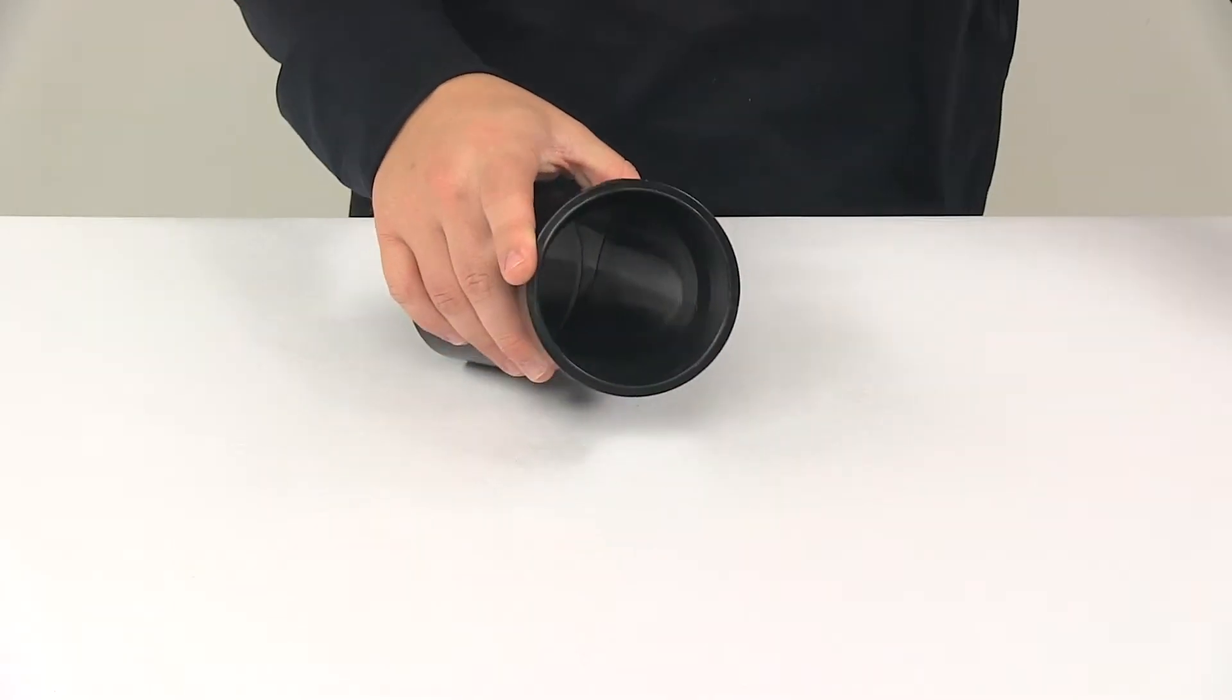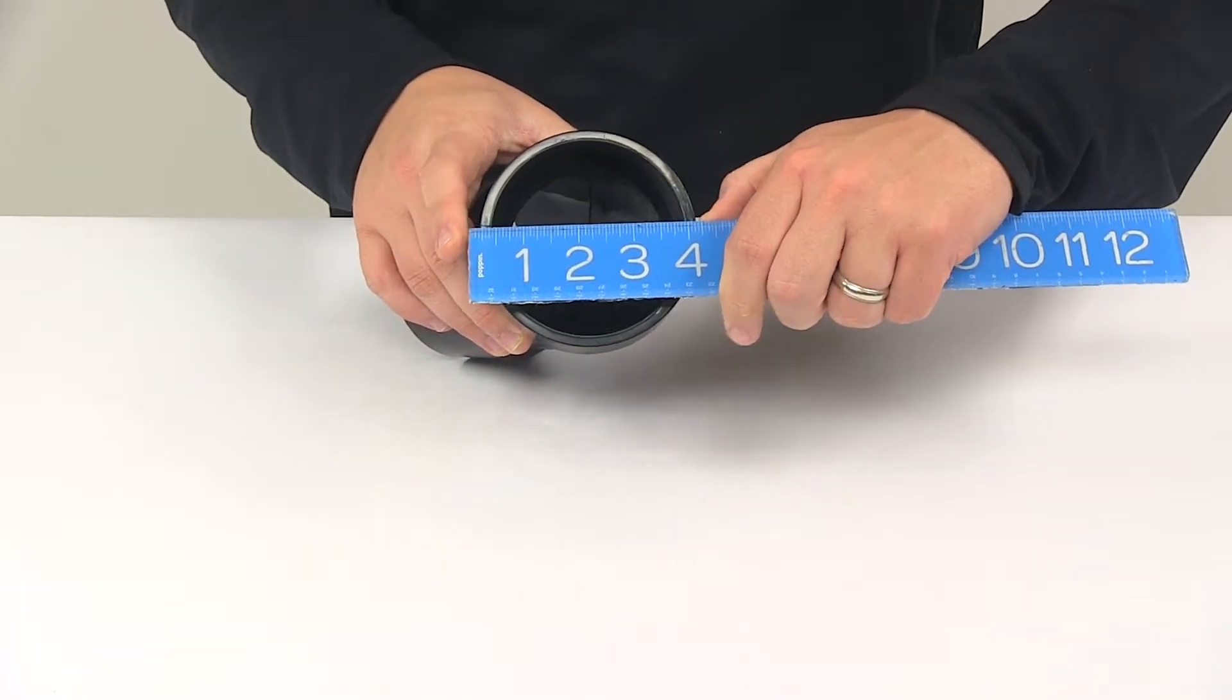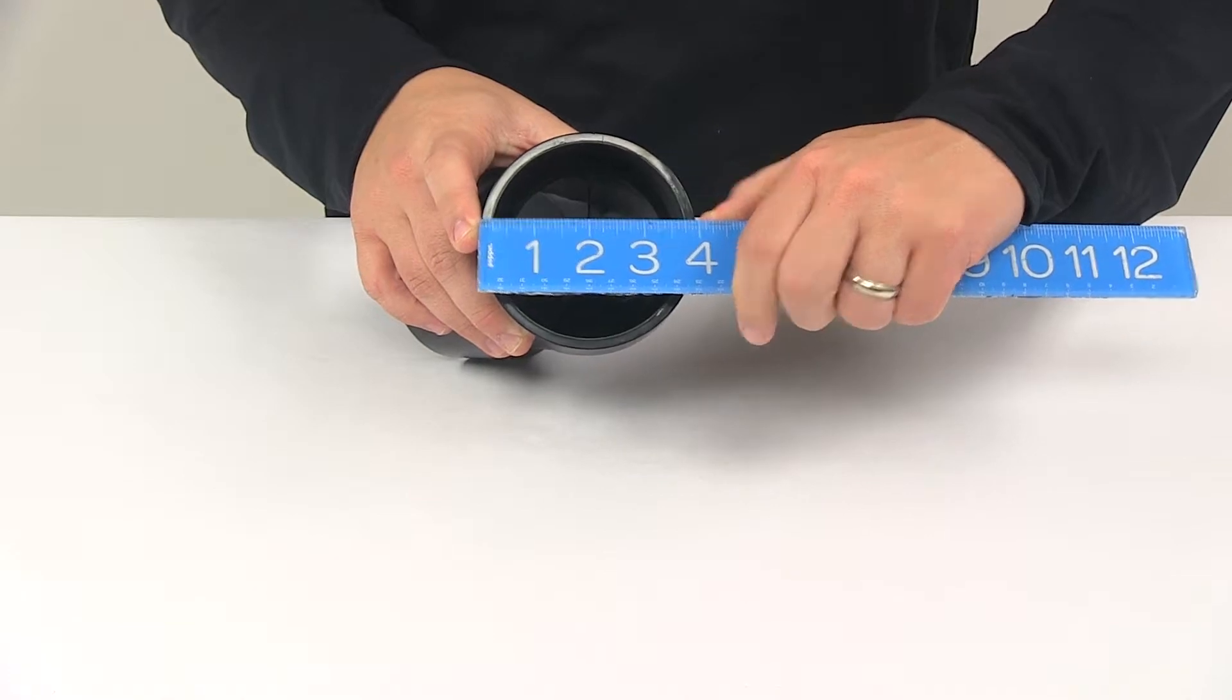A few measurements to go over real quick. The inner diameter is going to measure three and a half inches. Outer diameter is closer to four inches.